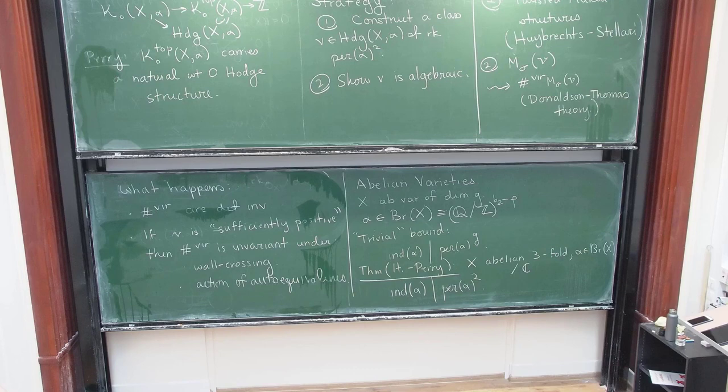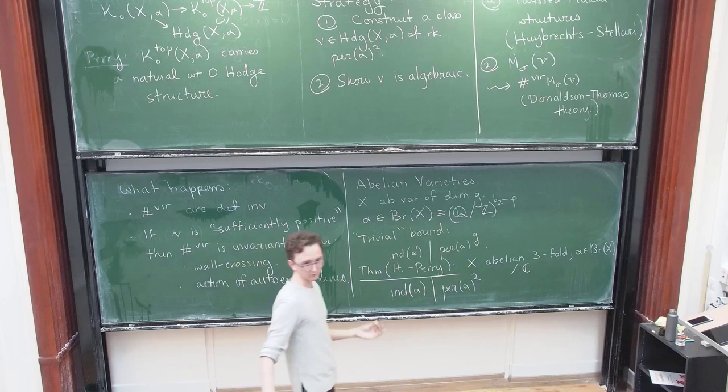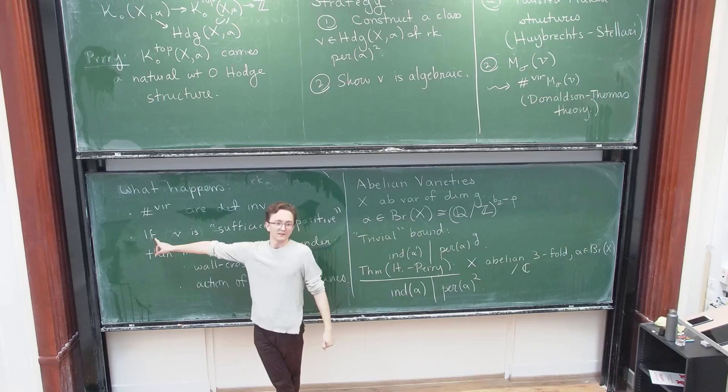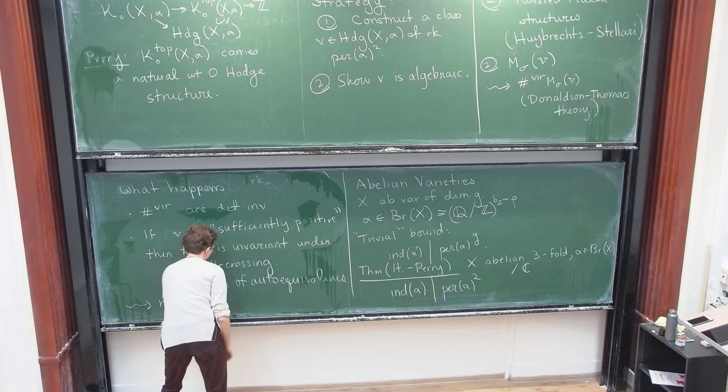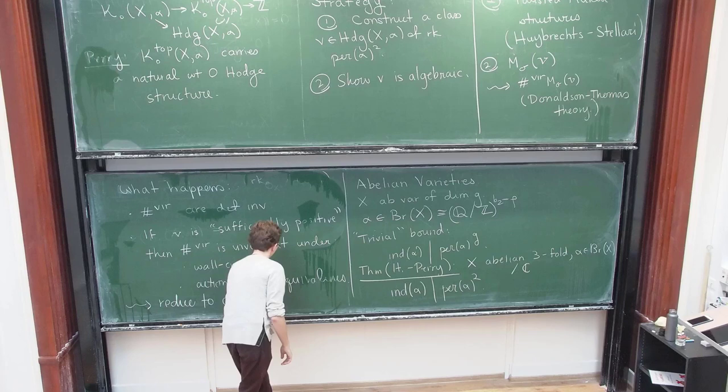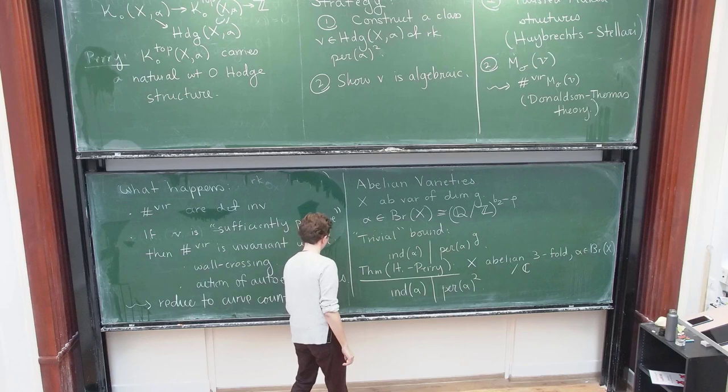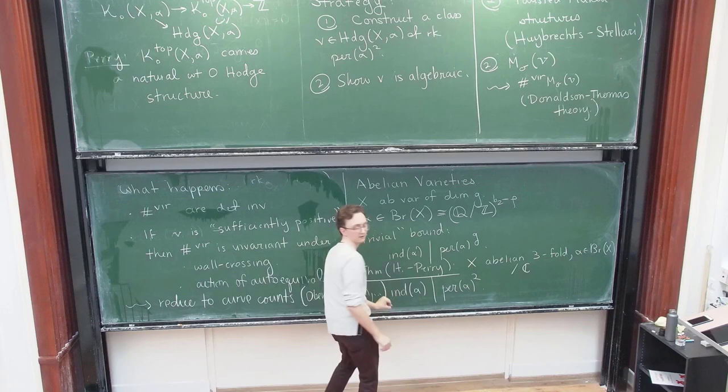So here, the point is that, like I said earlier, auto-equivalences don't preserve the rank. So in the end, you cook up, you deform, and you cook up auto-equivalences that will carry your class V to something that looks like the ideal sheaf of a curve, and you're doing curve counts in the end. So the final reduction is to, you reduce to these virtual Donaldson-Thomas theory curve counts on abelian threefolds, which were worked out by many people, particularly Oberdieck and Shen, and then others in a long series of papers. So in the end, you reduce to curve counts. Sorry for running over. We'll stop there.